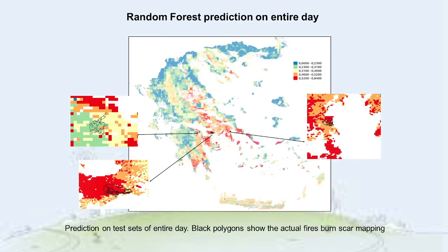At a later stage, we ran prediction on test sets of entire days, thus simulating real-world conditions. On the map shown in this slide, the burned-area polygons of actual fires of the specific day contain mostly red cells, where the predicted class from the model is fire with high scoring. The recall of the fire class in those tests stayed as high as in the Random Forest validation process described previously.